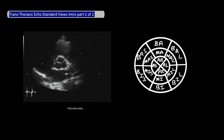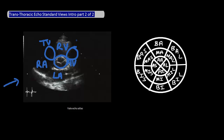In a real echo, the view looks like this. Again, since this view is from the parasternal position, the right ventricular outflow tract is up top. The right atrium is here, and the left atrium is here. The aortic valve, which is the main purpose of this image, is right here in the middle. The tricuspid valve can also be seen around this area, and the pulmonic valve around here.